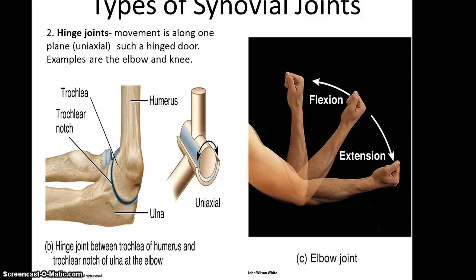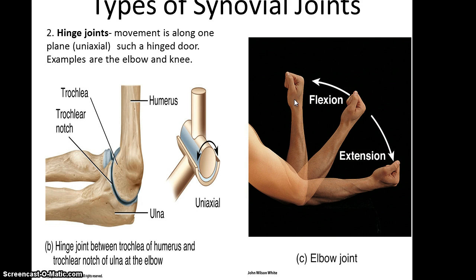The second type is hinge joints. The best example is the elbow, which only allows movement along one plane — so this is uniaxial. It functions like the hinge on a door: you can bend your arm toward your shoulder, which is flexion, and you can also re-extend your arm, which is extension. However, with this kind of joint you never get hyperextension unless you've hurt yourself.